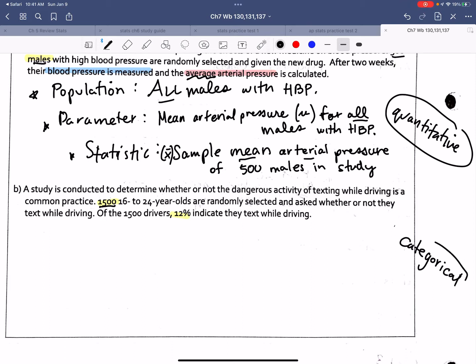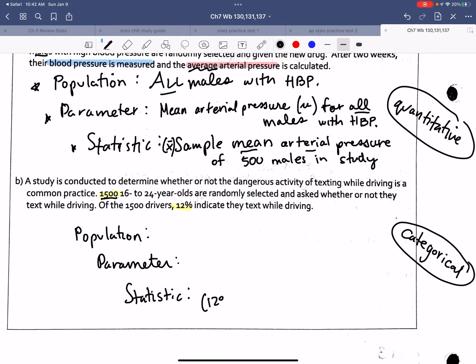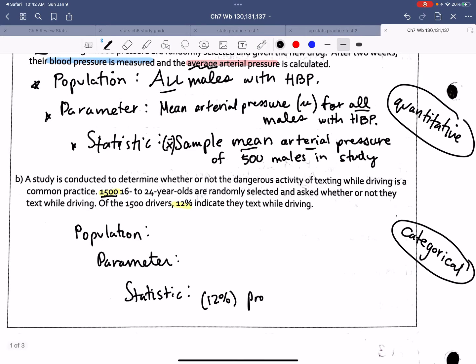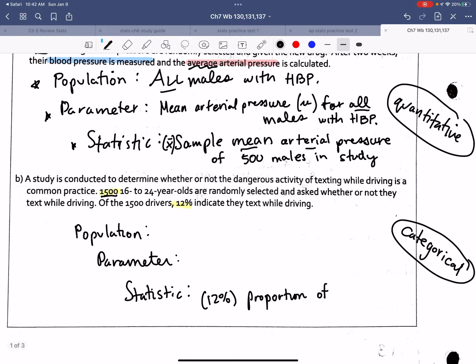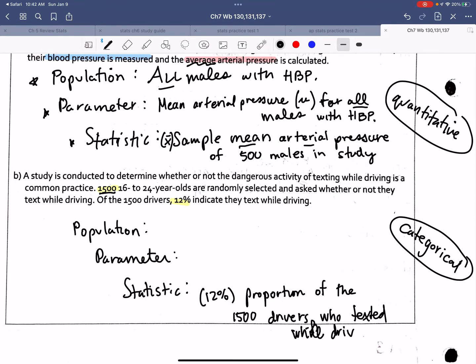Of the 1500, 12% indicated they're texting. So this is an example of quantitative, and this is categorical. So this is when we ask a yes or no question. So in the same setting, we're going to have a population, a parameter, and a statistic. And my parameter is the number that describes my population, and my statistic is the number that describes my sample. So in my statistic, this number, 12%, is the proportion, that's my statistic, it's my proportion of the 1500 drivers who texted while driving.